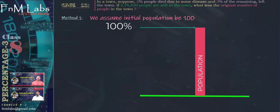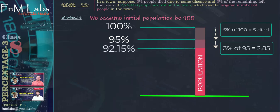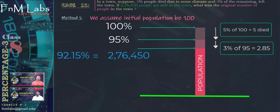It is given that 5% of the people died. So the population is reduced by 5% of 100, and the remaining population is 95%. Again, 3% of this 95 left the town. The population further gets reduced to 95 minus 2.85%, which is 92.15%. Hence, the remaining population is 92.15%. But this 92.15% is given as 276,450. We will use this information to find out the initial population.